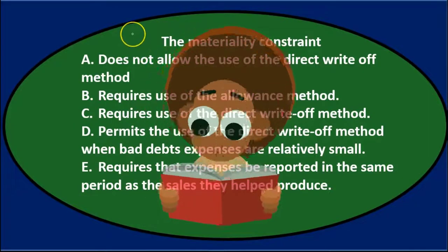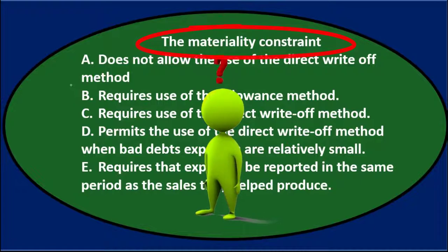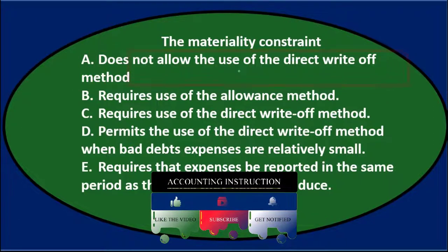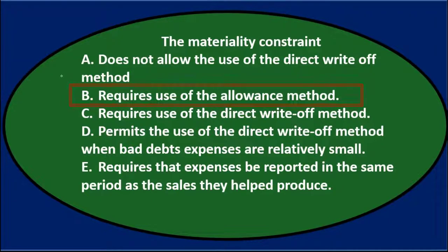We'll go through this with the process of elimination. If we don't know what the materiality constraint is, we might think the direct write-off method is a good answer since it's not the preferred method. A says it does not allow the direct write-off method, and B says it requires the allowance method. There are only two methods — the direct write-off method or the allowance method. If A says we're not allowed to use direct write-off and B says we're required to use the allowance method, they can't both be right, so those essentially eliminate each other.